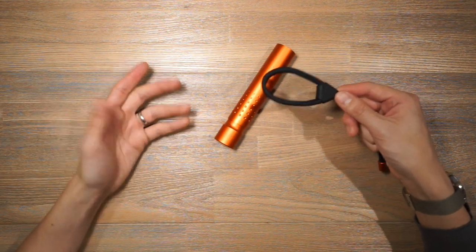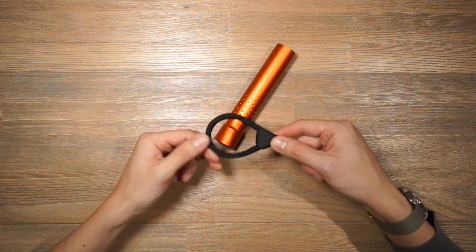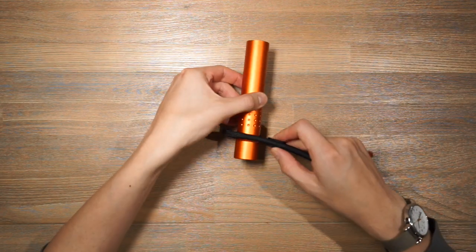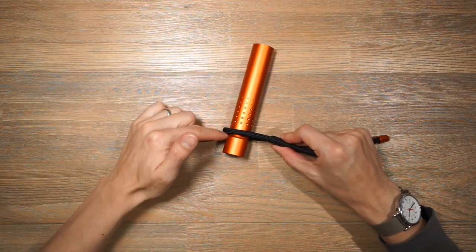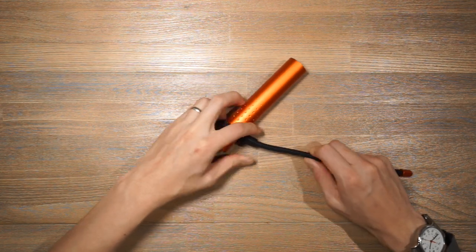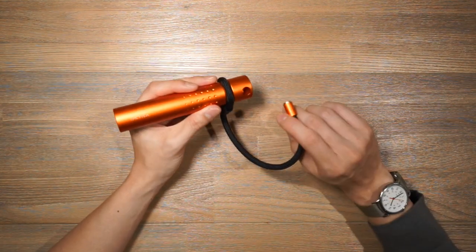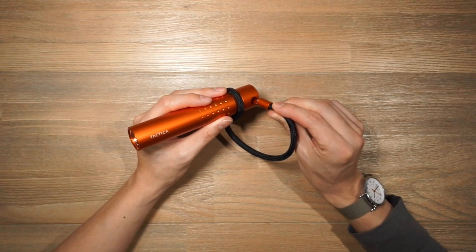Now as mentioned it comes with a magnetic lanyard, this paracord lanyard. You simply wrap around the tail cap just at the bottom there and then cinch it tight and on the tail cap here there is a little port for you to stick in that magnetic stud.